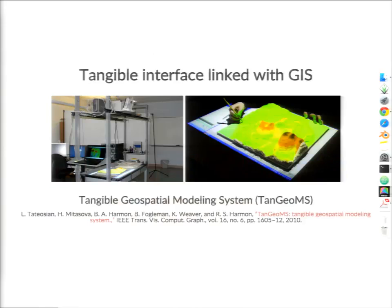About 10 years ago, researchers from MIT Media Lab were trying to address this type of problem, and they developed the first prototypes of environments which coupled 3D physical models with analysis. My advisor, Dr. Helena Mitášová, was collaborating with them and developed a similar system linked to GIS, because we needed to support modeling and analysis of real-world landscapes. However, the system used a fairly expensive and very heavy laser scanner, which limited the broader usage.